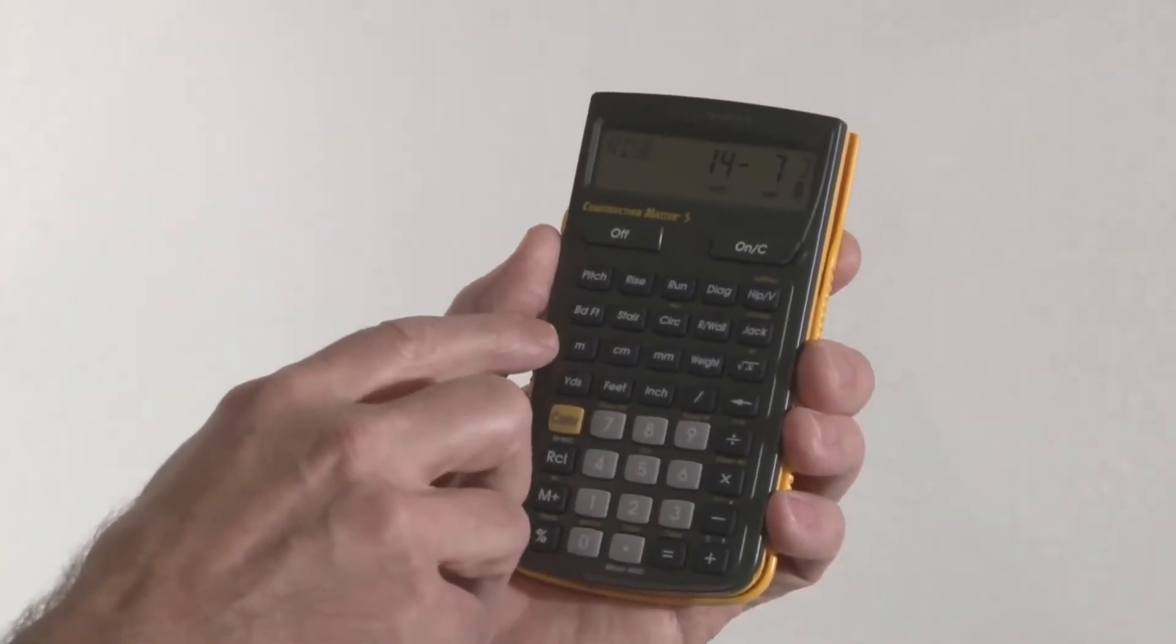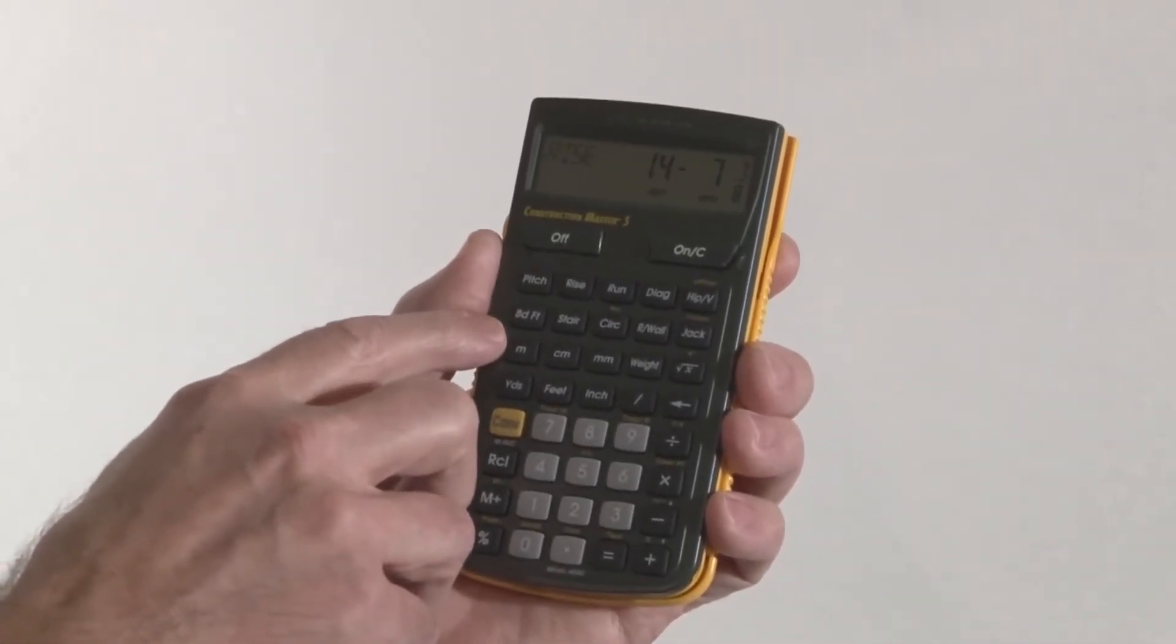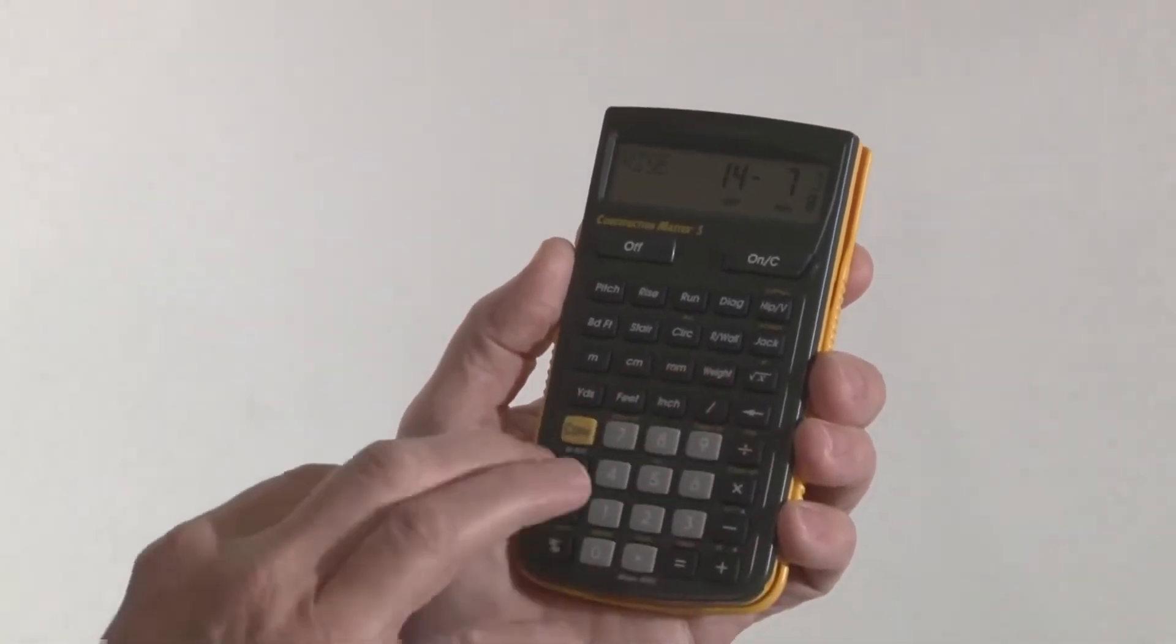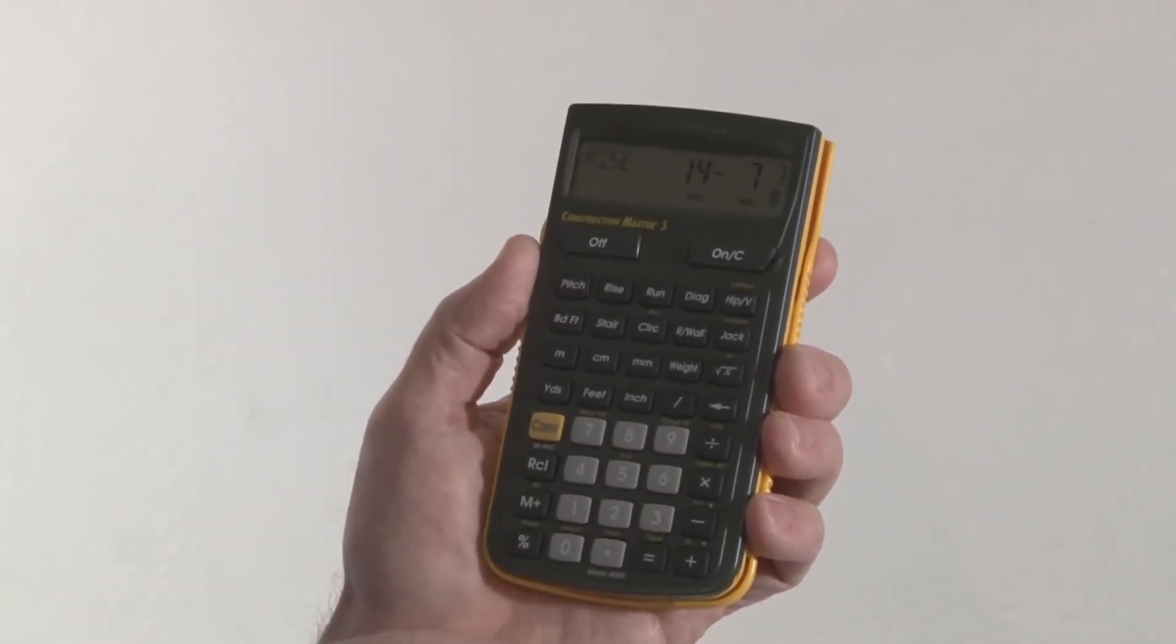The board feet key here will give you lumber costs, total board footage, etc. The weight key will give you conversions between any kind of weight units that you might come across.